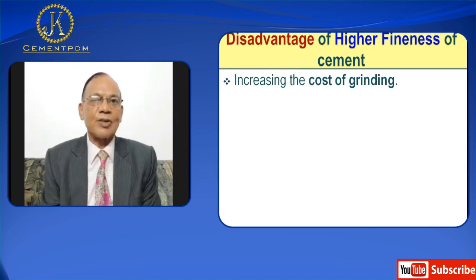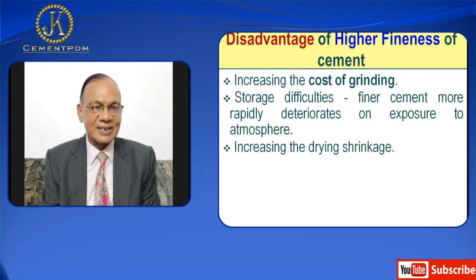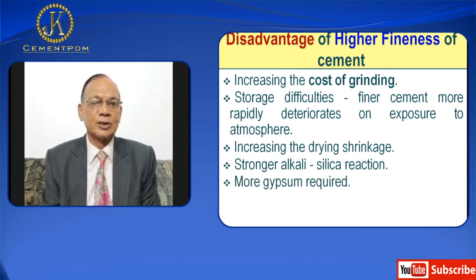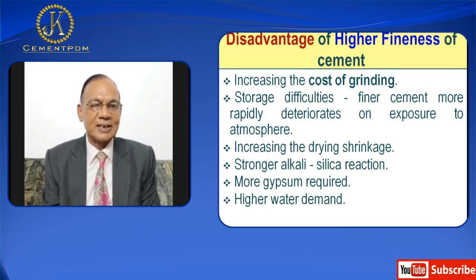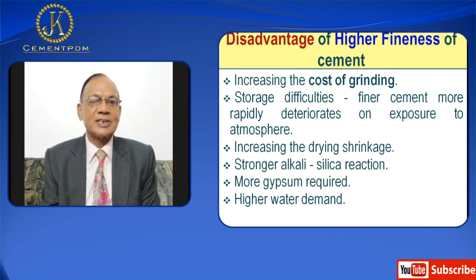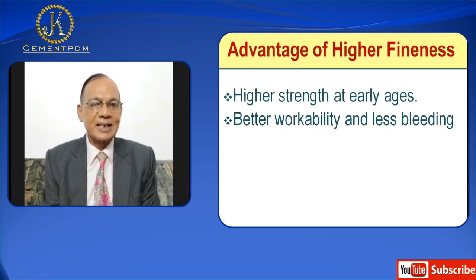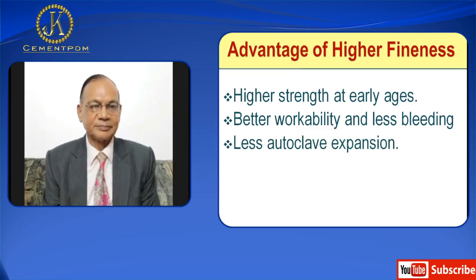Now, disadvantages of higher fineness. Disadvantages are: it increases the cost of grinding; because of higher fineness you encounter difficulties in storage of cement; finer cement deteriorates more rapidly on exposure to atmosphere; it increases the drying shrinkage; because of higher fineness you have a stronger alkali-silica reaction; you need more gypsum; and higher water demand is also required. Now the advantages of higher fineness: higher strength at early ages, better workability, less bleeding, and less autogenous shrinkage.